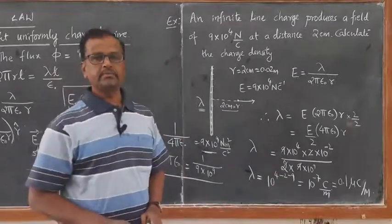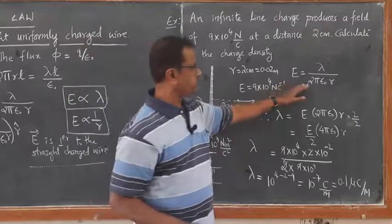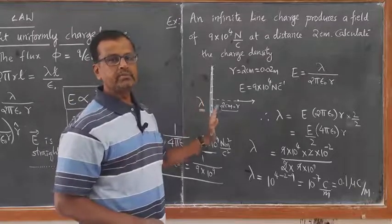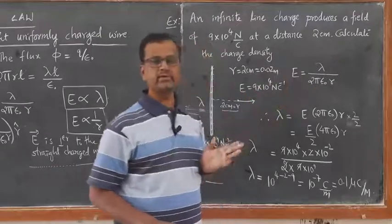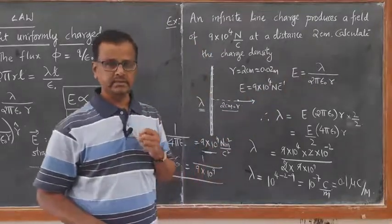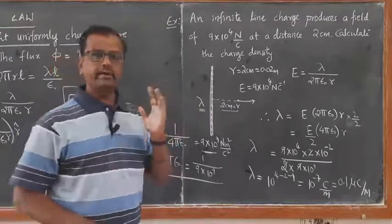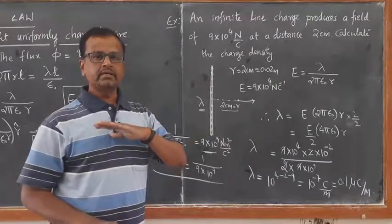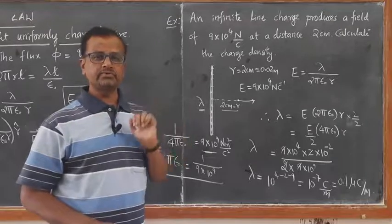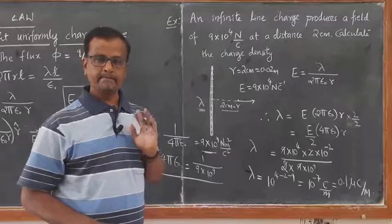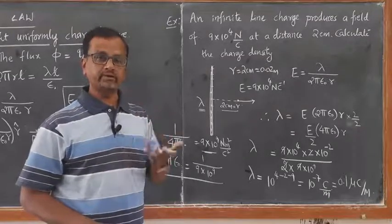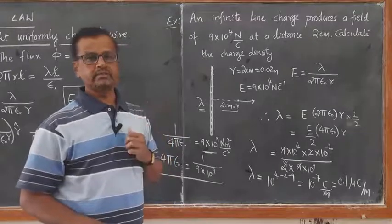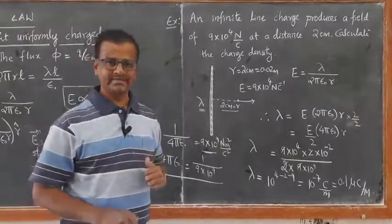That is how we can solve the problem using the equation of electric field due to linear charge density for an infinitely long straight uniformly charged wire: E equals lambda over 2π epsilon naught r. In the next video, we will discuss how to find the electric field due to surface charge density — an infinitely thin large uniformly charged plane sheet — using Gauss's law, which again makes the calculation simple. Thank you, have a nice day.